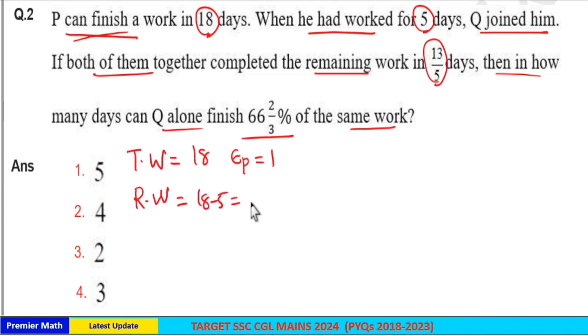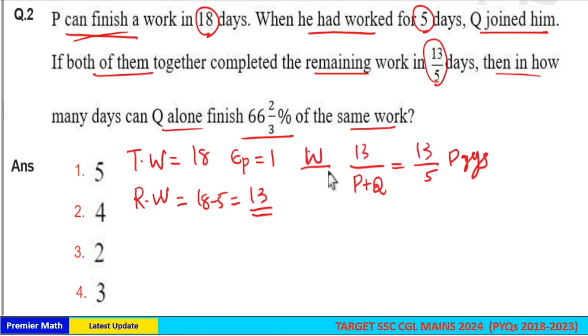And this 13 units remaining work completed by P and Q together in 13 by 5 days. So this 13 units work completed by P and Q in 13 by 5 days means work by efficiency will give you total number of days.